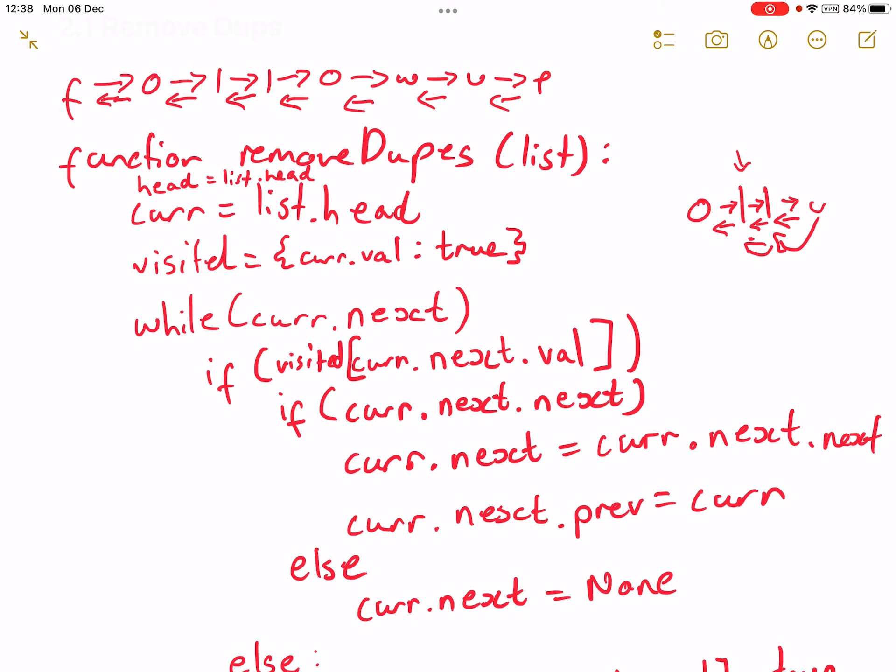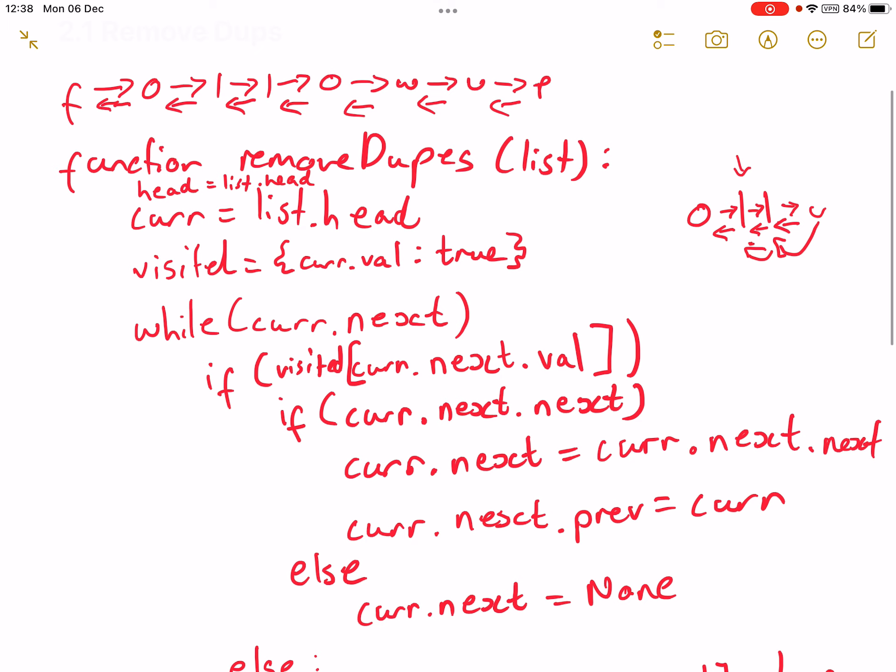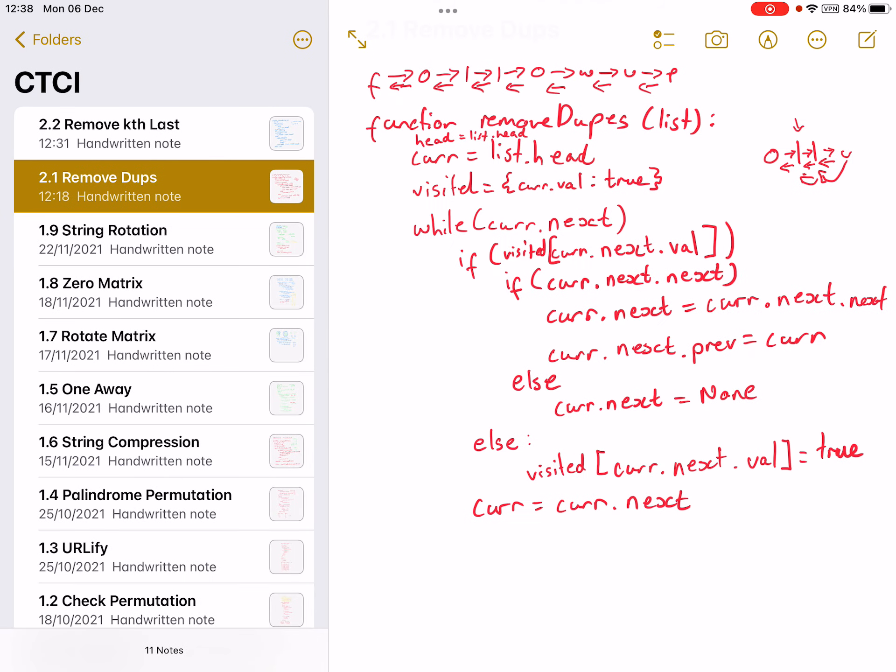So yeah I succeeded in both of these. Should we go into 2.3, just one more?